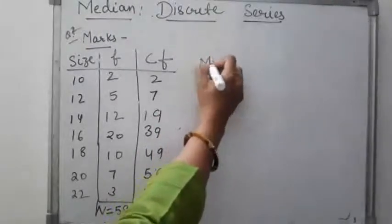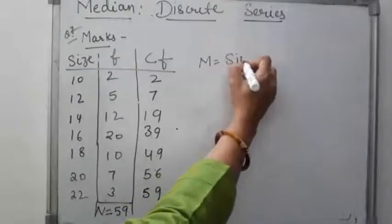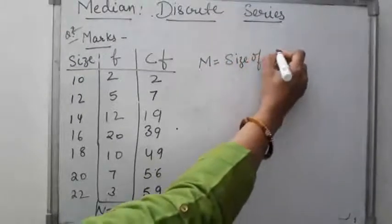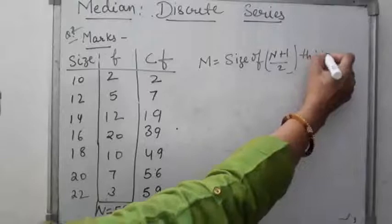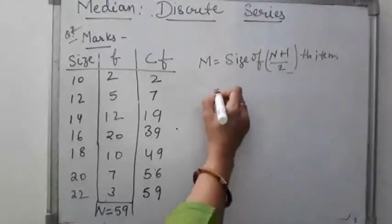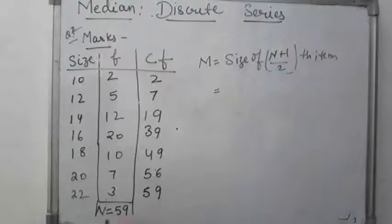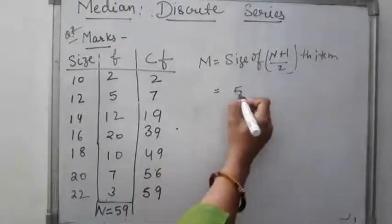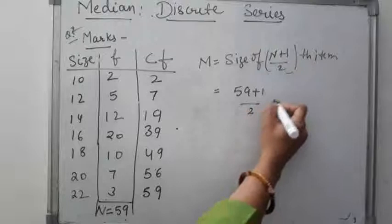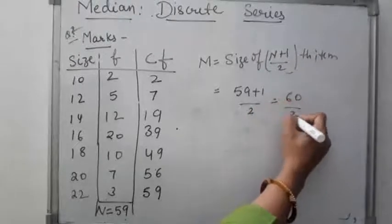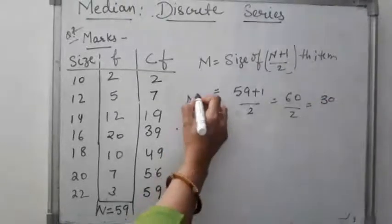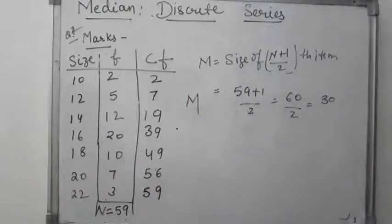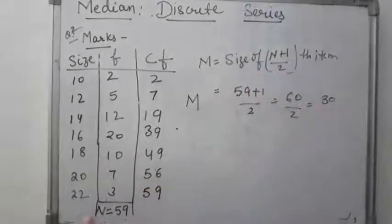Now we apply the formula: size of (N + 1) / 2 th item. N is the summation of f = 59. So (59 + 1) / 2 = 60 / 2 = 30. The size of the 30th item is the median.